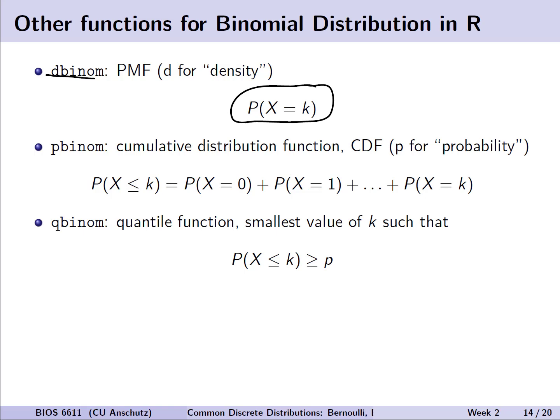If instead we want to look at the cumulative distribution function or the probability that X is less than or equal to some number of successes, we can use the pbinom function within R. This will calculate for us, instead of having to do dbinom over and over again, this calculation for our CDF.